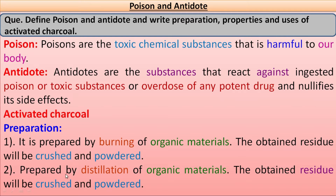The second preparation method is that activated charcoal can also be prepared by distillation of organic material. When we carry out distillation of any organic material, we get the residue. The residue will be crushed and powdered. This powdered material is known as activated charcoal.